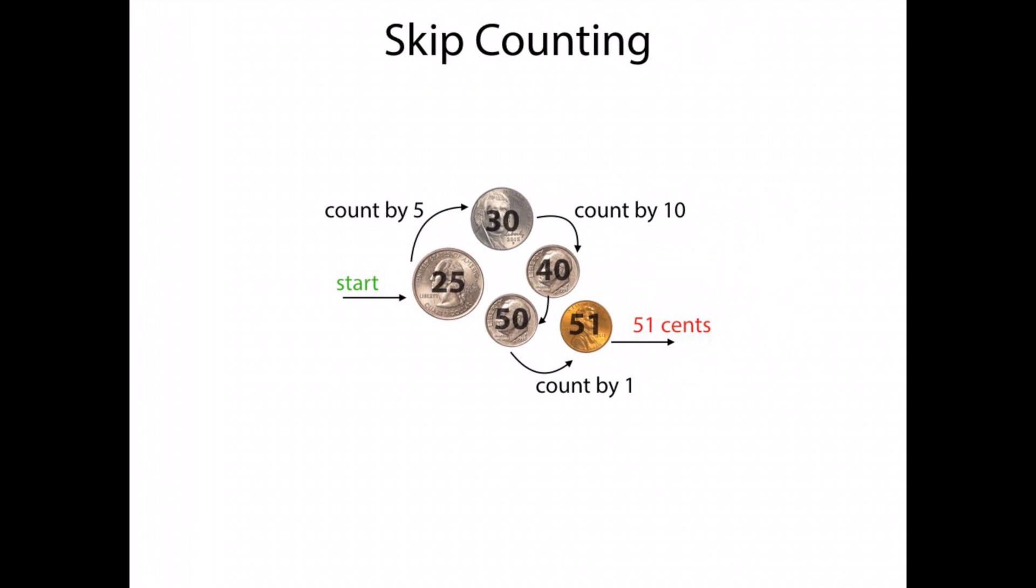Another one would be skip counting. With this group of coins I would start with a quarter which has the highest value in this set. So I'd start with the highest value, 25. I would count the nickel, which is worth 5, to be 30. The reason why I would do that is because I want to make a 10. Tens are nice, right? They're perfect in math. Then I would continue that skip counting by 10, adding those two dimes. So we were at 30, then 40, 50, and then count by 1 to get 51 cents. So that's skip counting.